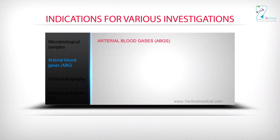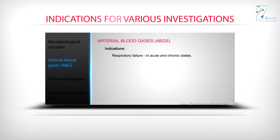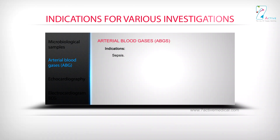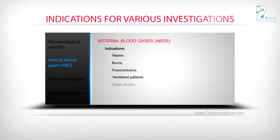Arterial Blood Gases (ABGs). Indications include respiratory failure in acute and chronic states, cardiac failure, liver failure, renal failure, hyperglycaemic states associated with diabetes mellitus, multi-organ failure, sepsis, burns, poisons or toxins, ventilated patients, sleep studies, and severely unwell patients from any cause, as ABGs affect prognosis.